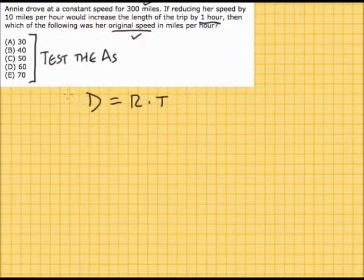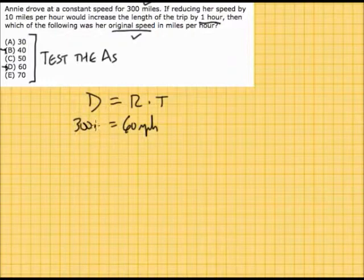In the case of B versus D, 40 doesn't go evenly into 300, so I'd be a little suspicious of that answer. I'm going to test D first because I know 60 goes in. If I'm going 60 miles per hour for 300 miles, how long would that take? Well, that's actually a pretty easy bit of math. That means it would take five hours.